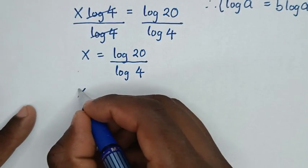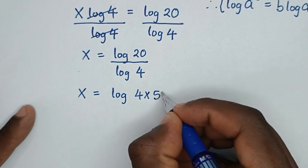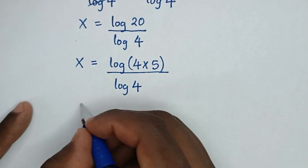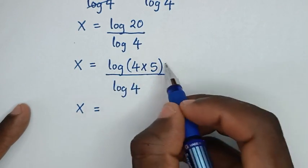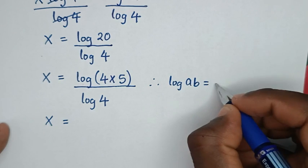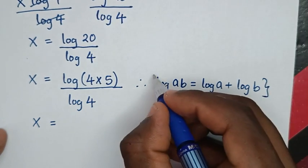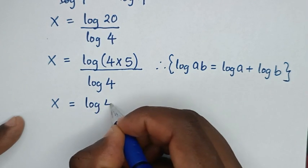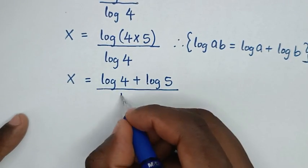Then in the next step, x is equal to log of 20, which is the same as log of 4 times 5, all over log of 4. We'll apply the logarithmic product rule: log of a times b is equal to log of a plus log of b. So log of 4 times 5 becomes log of 4 plus log of 5, all over log of 4.